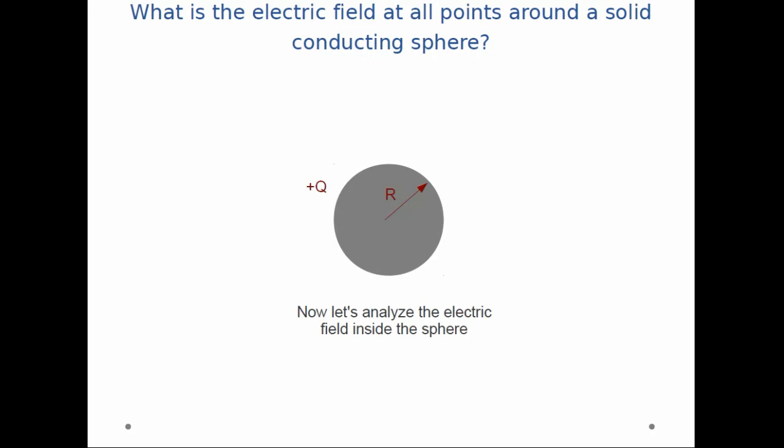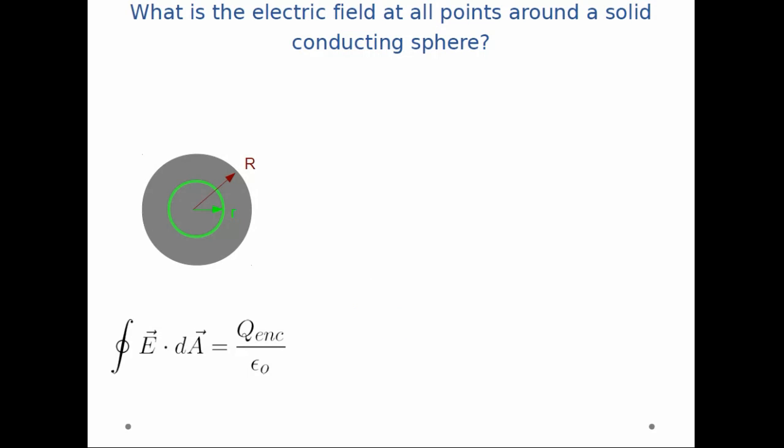Now let's analyze the electric field inside the sphere. So once again, I'm going to draw my Gaussian surface. You'll notice the Gaussian surface has radius little r, and it is inside the sphere in this case. So once again, I write out Gauss's law,